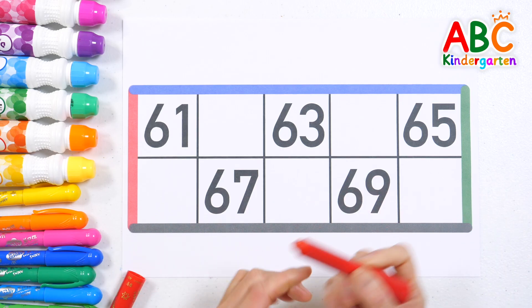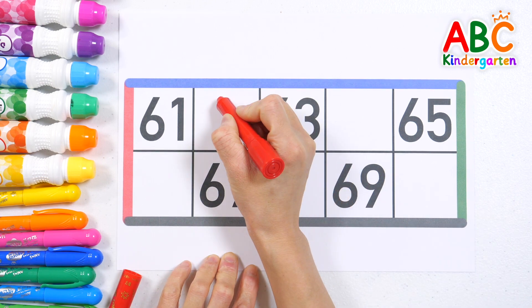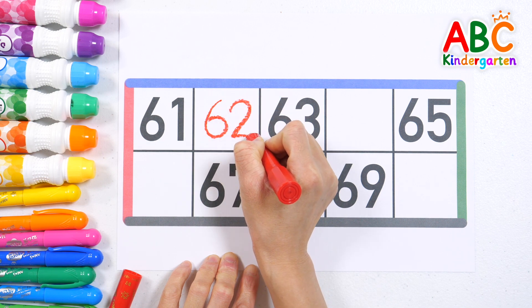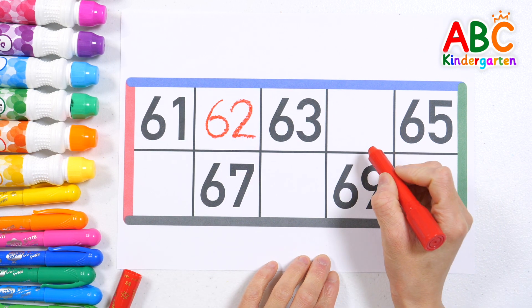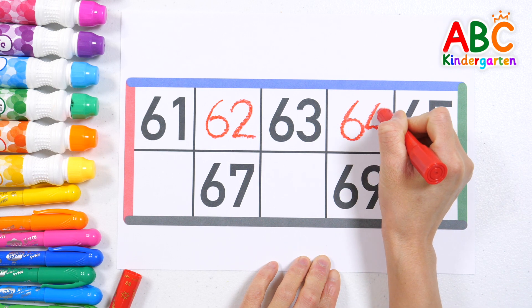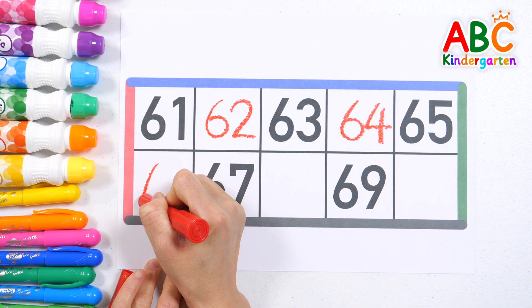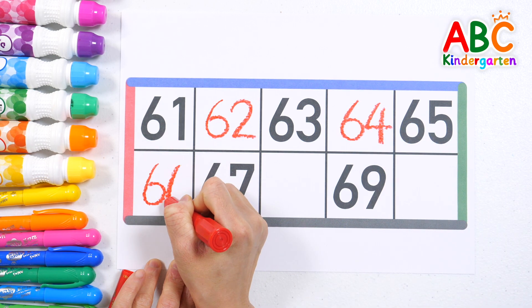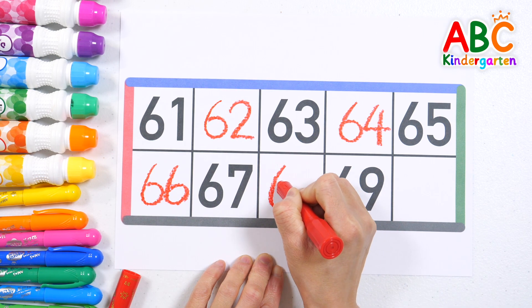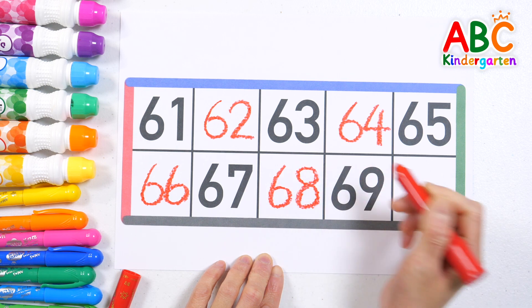Let's write the correct even number to fill in the blank. 62. 64. Next time won't you sing with me? 68. 64.